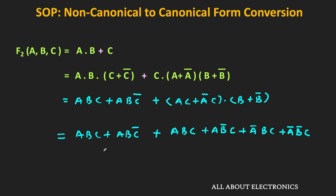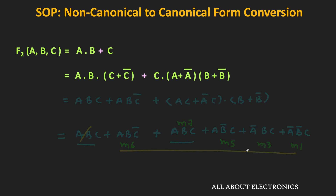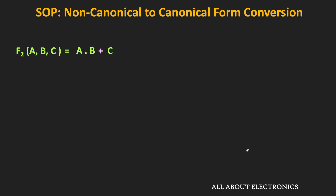Out of the six terms, A·B·C appears two times so we consider it only once, leaving five unique terms. A·B·C̄ corresponds to m6, A·B·C corresponds to m7, A·B̄·C corresponds to m5, and the remaining two terms correspond to m3 and m1. So the canonical SOP form is the summation of these minterms, which can be written in abbreviated form.